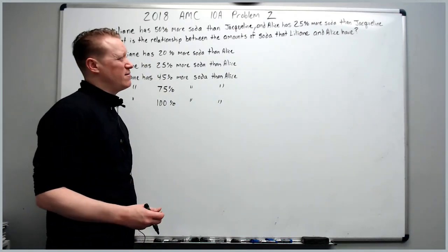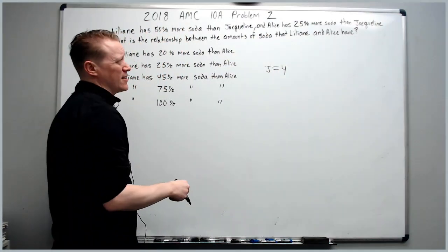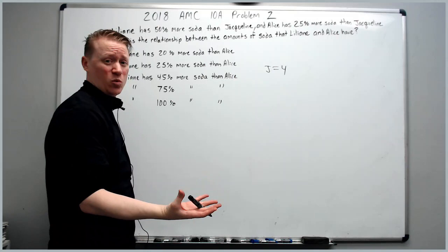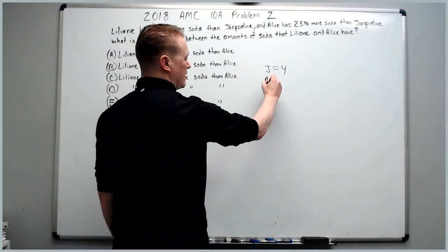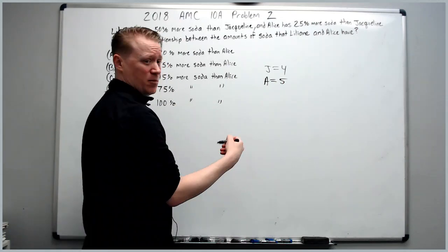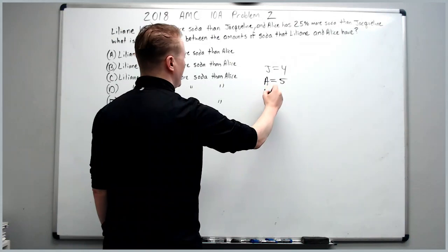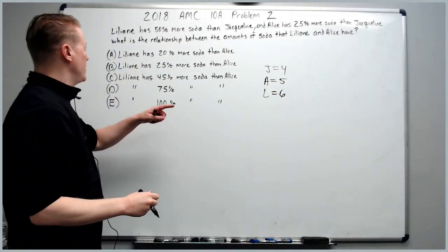Just assume that Jacqueline has four sodas. So if Jacqueline has four sodas and Alice has 25%, which is one fourth more, Alice will have five, and Lillianne has 50% more, which is one half. That's four plus half of four. Lillianne will have six. Now read the question.